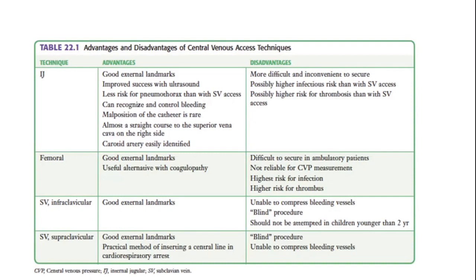In the interest of time, we'll highlight some key points — and you'll get these slides. It's important to consider why you might choose internal jugular versus subclavian vein in terms of complication rates. For example, a femoral line may be easy access in an emergency, but it carries the highest risk for infection and you can't do reliable CVP measurements. Understanding both advantages and disadvantages for each approach is important.